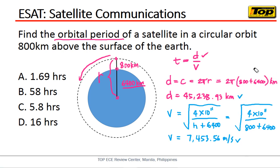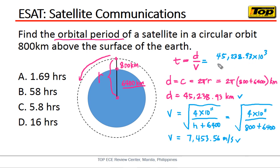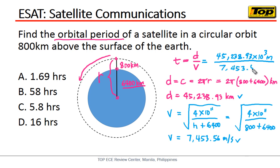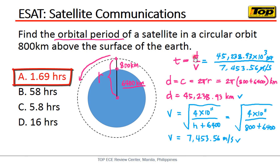Now we have both distance and velocity, so we can solve for time. Substituting: time equals 45,238.93 × 10³ meters divided by 7,453.56 meters per second. The meters cancel out, giving us a result in seconds. Converting that into hours gives us the answer — letter A: 1.69 hours.